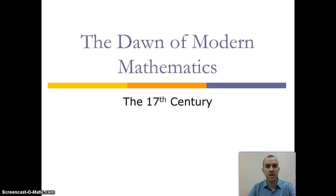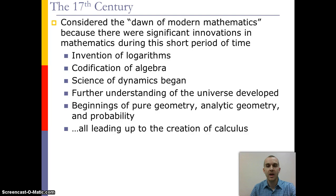In this video we'll look at the dawn of modern mathematics in the 17th century. One of the reasons we call it this is because we have major innovations occurring in mathematics in a very short period of time, such as logarithms, codification of algebra, science of dynamics beginning, a better understanding of our universe, and beginnings of geometries and probability — all of this leading to the creation of calculus.